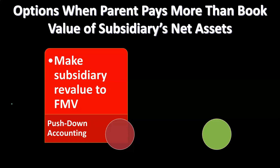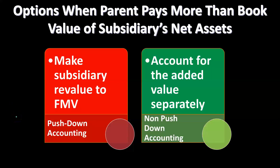Push down accounting says: there is a controlling interest, or in the case of 100% parent ownership of the subsidiary, why not revalue once and for all the valuations on the subsidiary? Then when we do the consolidation it will be easier. Alternatively, non-push down accounting accounts for the added value separately.